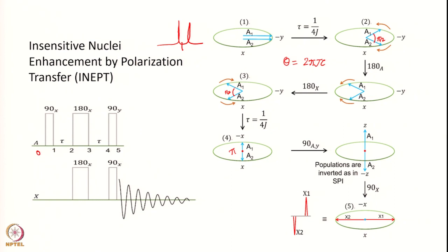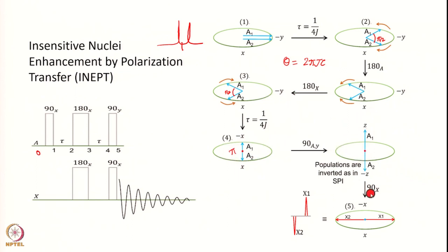Now we apply a 90-degree Y pulse onto the A transition. I am applying a pulse along the Y axis. These two magnetizations which are along X and Y will now go to the Z axis — on the positive and negative Z axis.